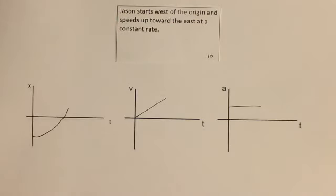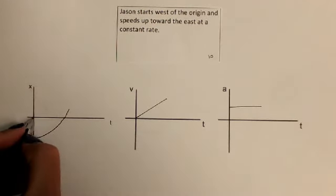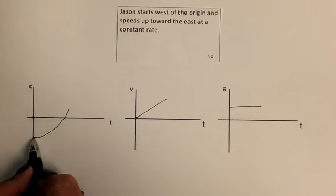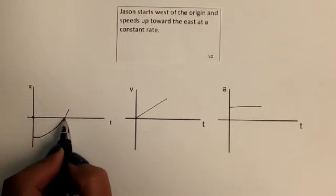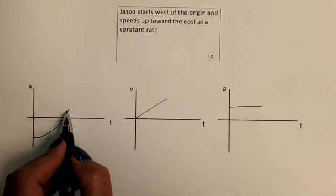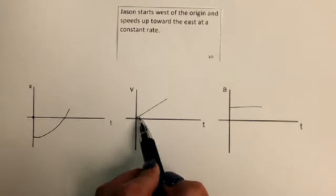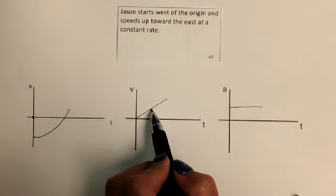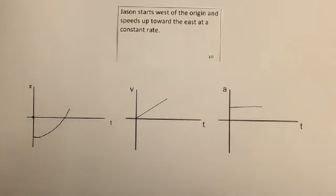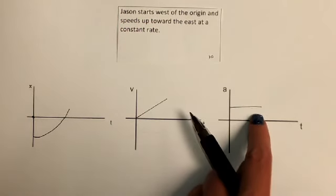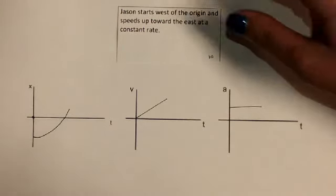Here is the answer — does your answer match mine? Here's the origin. He starts west of the origin and speeds up while traveling east, so he's going to have an increasing positive slope because he has an increasing positive velocity — he's speeding up in the positive direction. On the velocity-time graph, he has a constant positive slope because he's traveling east, so it's on the positive side and he's speeding up. Speeding up (positive) going east (positive) gives a positive acceleration, and constant positive slope gives constant positive acceleration.